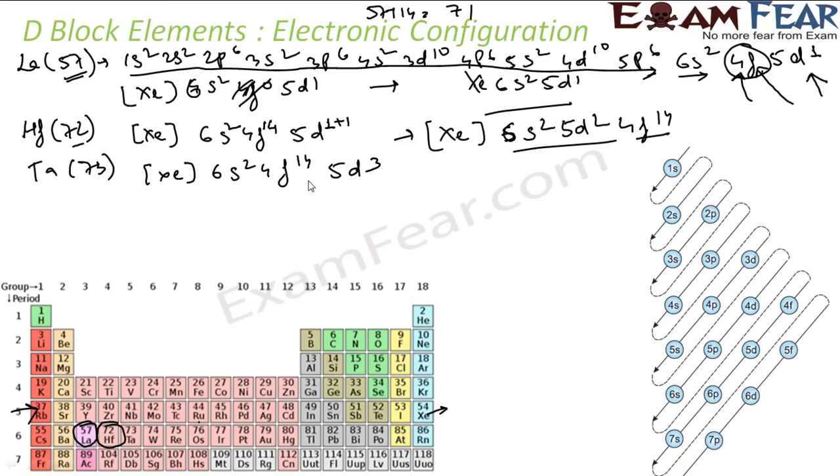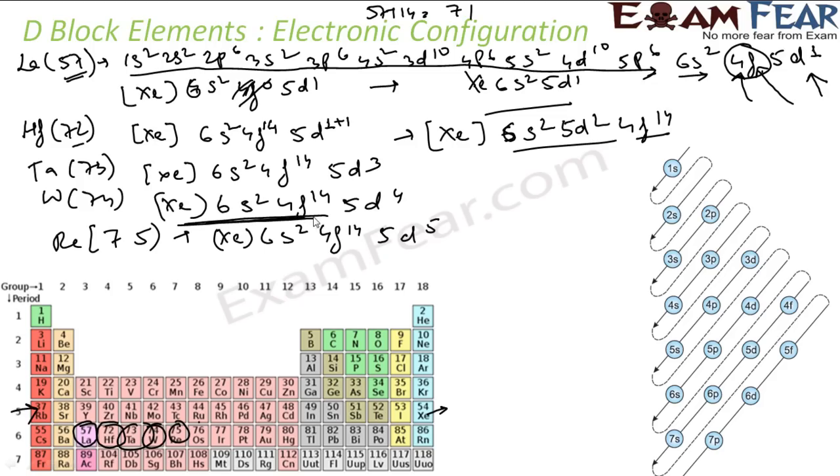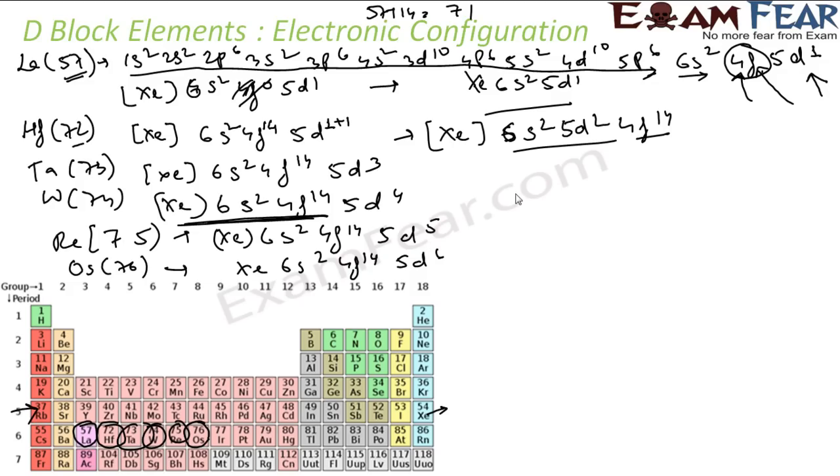Then we have W tungsten 74, same thing: xenon 6s² 4f¹⁴ 5d⁴. Same thing for Re, rhenium 75. These guys will actually take care of 70 electrons and then 5d⁵ will take care of 5 electrons. After osmium we have iridium.